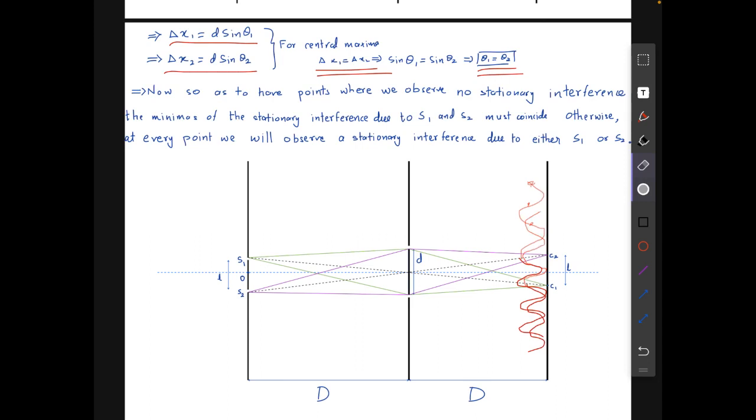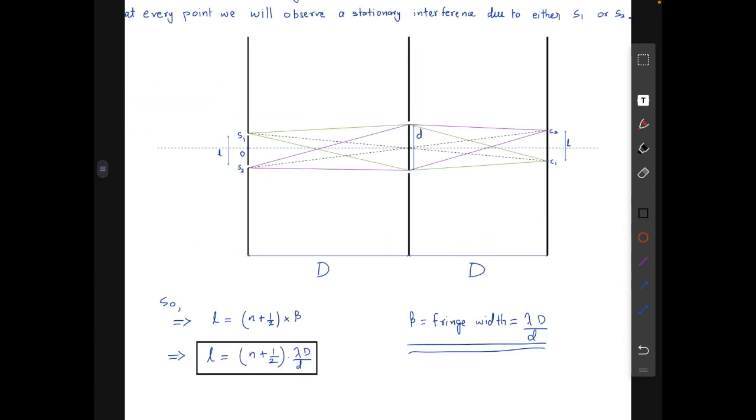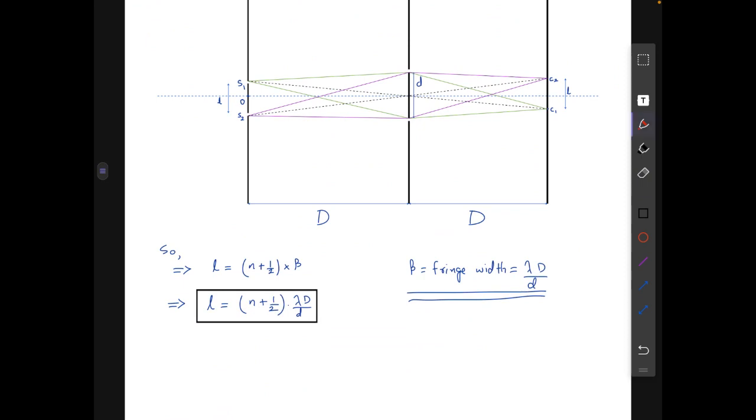What we can get from here is that the distance between the two central maximas l should equal (n + 1/2) times the fringe width. The fringe width is the distance between two maximas in an interference pattern.